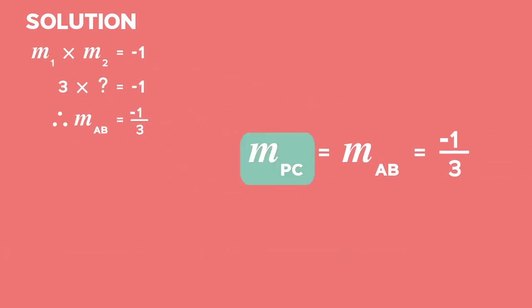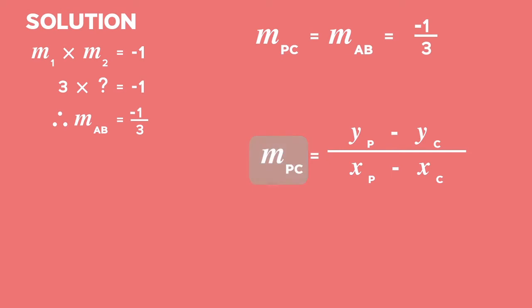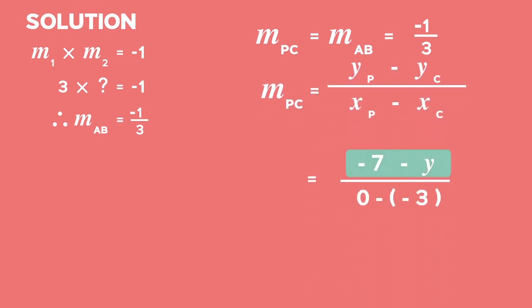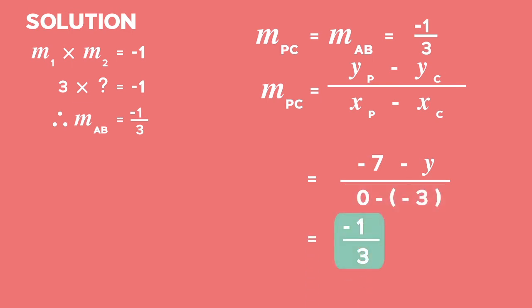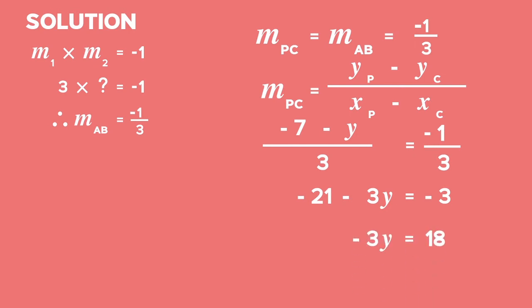The gradient of PC equals the gradient of AB, which is negative 1 third. Using the gradient formula: (y_P minus y_C) divided by (x_P minus x_C) equals (negative 7 minus y) divided by (0 minus negative 3) equals negative 1 third. So negative 7 minus y over 3 equals negative 1 third. By cross-multiplying, we get negative 21 minus 3y equals negative 3. Taking constant terms to the right: negative 3y equals 18. Dividing by negative 3, y equals negative 6.